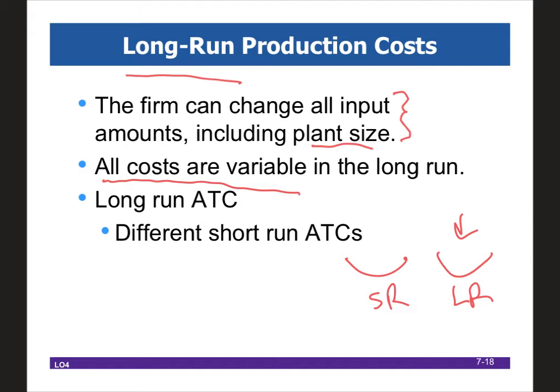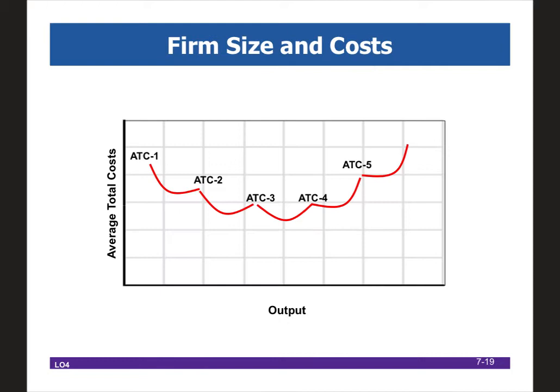That's what we're really going to be focusing on today — the shape of the long-run ATC and why it has that shape. It is important to recognize that the long-run ATC could also be constant, or have a shape that's different, but typically it looks like a bowl shape. The x-axis of the graph is output — so let's say this is a bakery producing particular quantities of cupcakes.